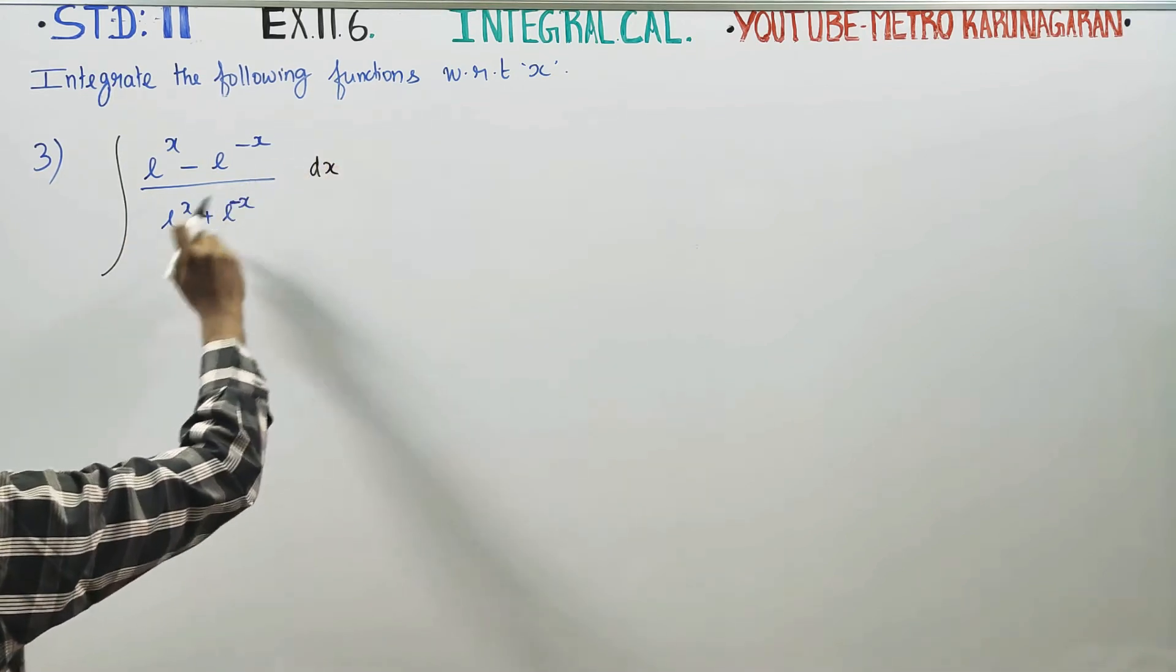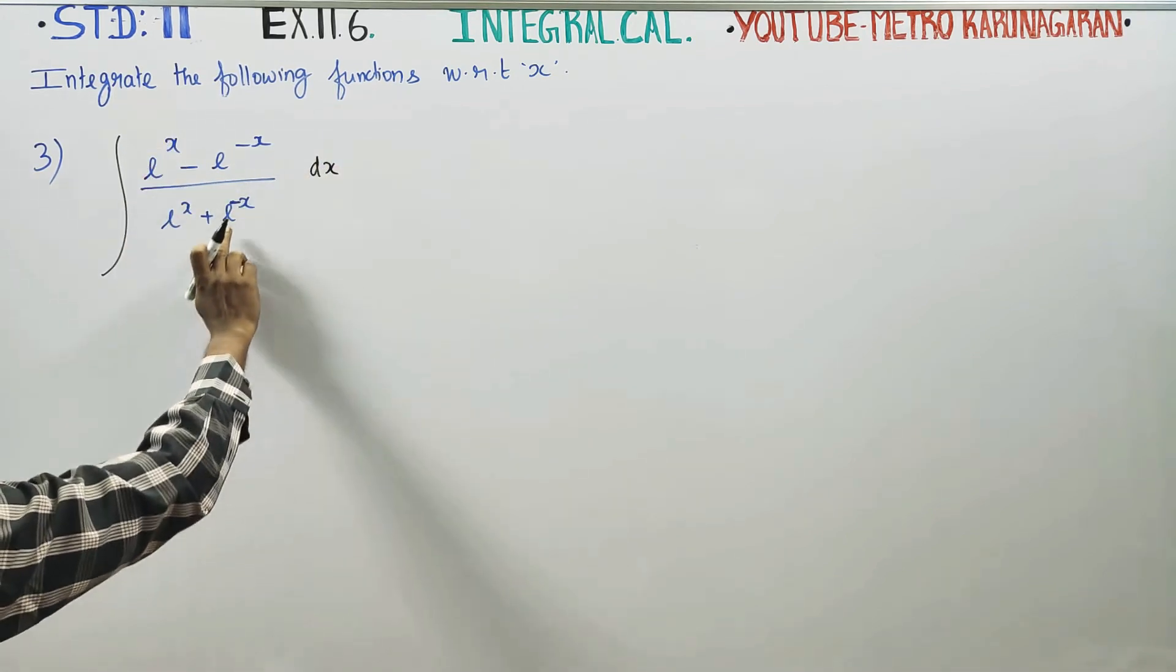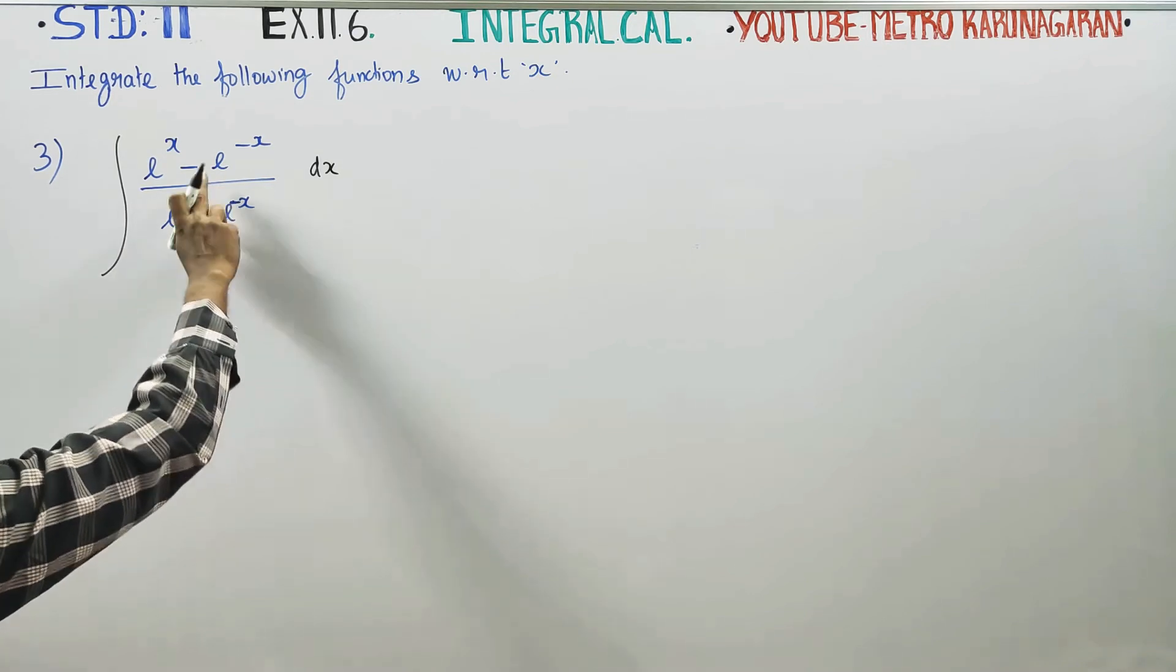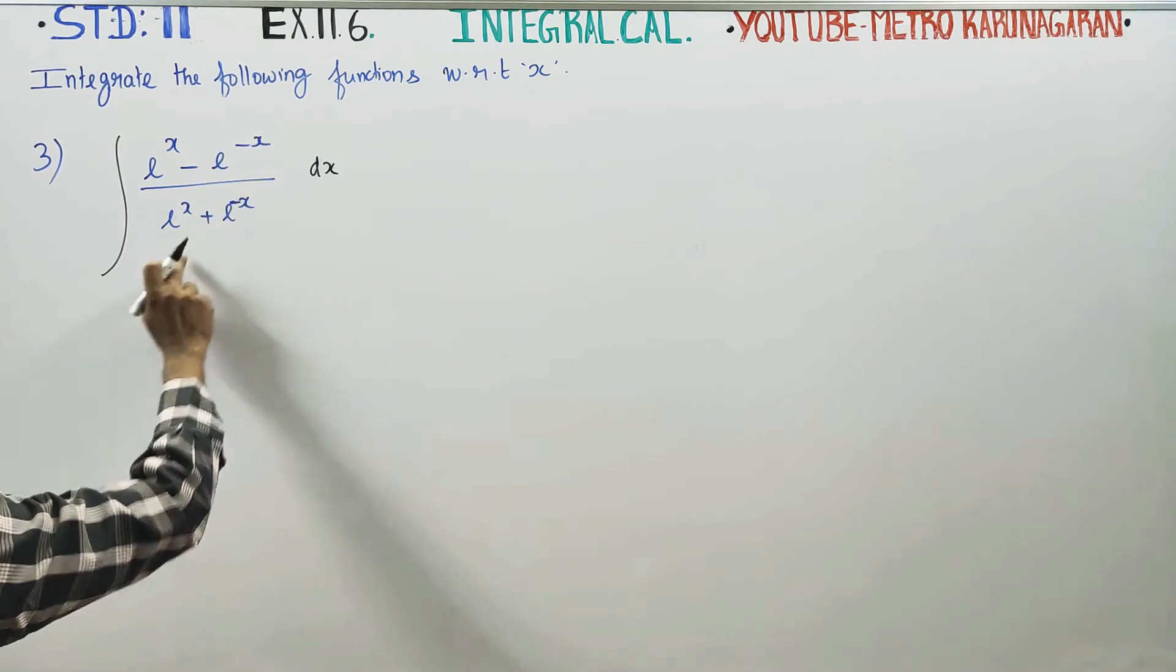E power X will go, E power minus X will go, minus E power minus X. Now we'll use the substitution method.